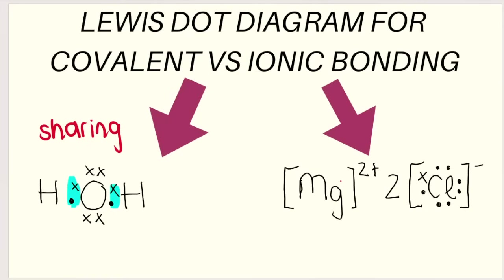When we look at the Lewis dot diagram, we can see that there's no sharing of electrons — there was a transfer. In this case, magnesium lost two electrons; it transferred two electrons to the chlorine. That's why it has a charge of 2+, because it lost two electrons. Each chlorine atom gained one electron, and therefore each chlorine atom has a charge of minus one, because it gained one electron. There are two chlorines because each magnesium could give away two electrons.